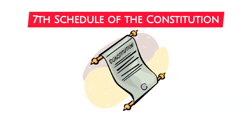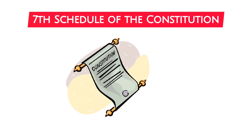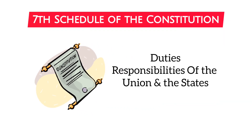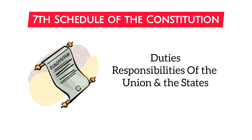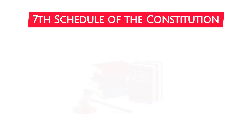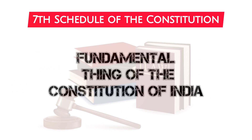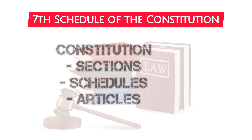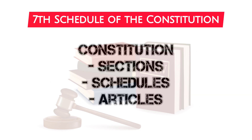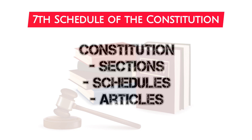One of the most significant sections of the Indian Constitution that describes the duties and responsibilities of the Union and the states is the seventh schedule. It became law on January 26, 1950 and is a fundamental component of the Indian Constitution. The Indian Constitution is broken up into a number of sections, schedules, and articles that collectively form the basis for how the Indian government is supposed to operate.